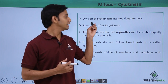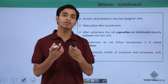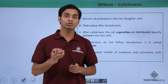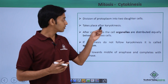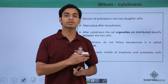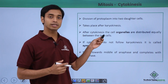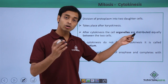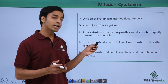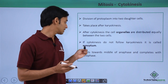Cytokinesis involves the division of the protoplasm into two daughter cells — the protoplasm of the parent cell gets distributed equally into the two new daughter cells. This takes place after the process of karyokinesis, meaning the nucleus divides first and is then followed by cytokinesis. After cytokinesis, the cell organelles are also distributed equally among the two daughter cells. If cytokinesis does not follow karyokinesis, this condition is known as syncytium.